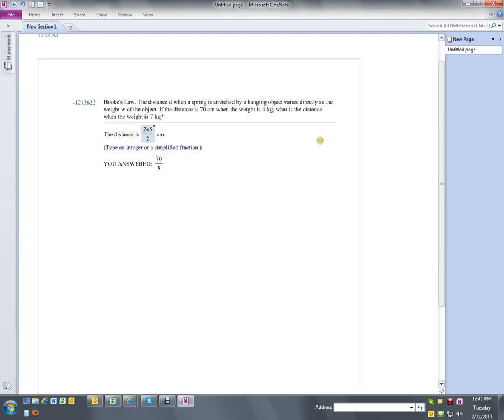Okay, first of all, I'm going to key in on the words varies directly. Okay, so with that, I know my formula is going to look like d for distance equals my constant proportionality times the weight. Because it varies directly, that tells me that the exponent on my w is going to be positive. In this case, it's going to be a positive 1.